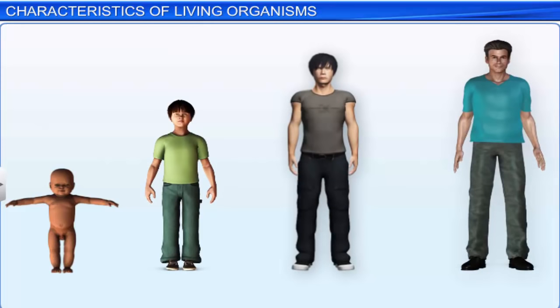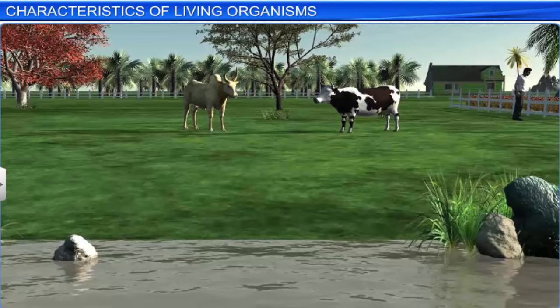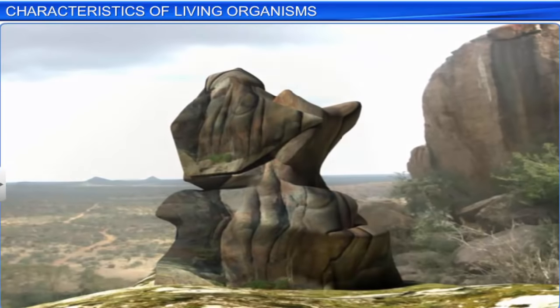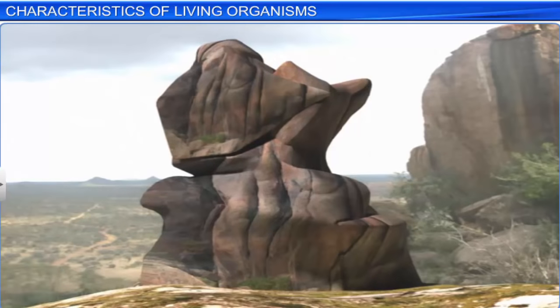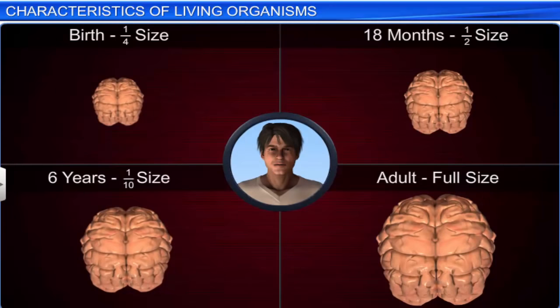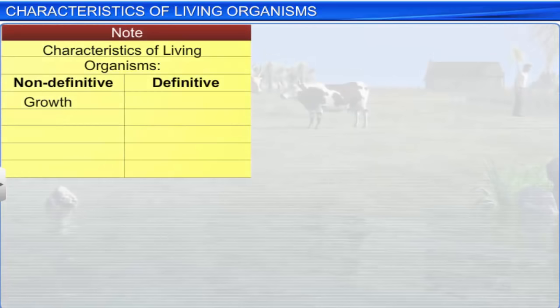After that, cell division occurs only when the body has to replace lost cells in certain tissues. However, everything that grows cannot be said to be a living organism. Take the example of a rock that will grow in size if sand gets deposited over it. However, this growth is external. On the contrary, growth in living organisms is internal. Growth is, thus, a characteristic feature of living organisms, though it is a non-definitive one.